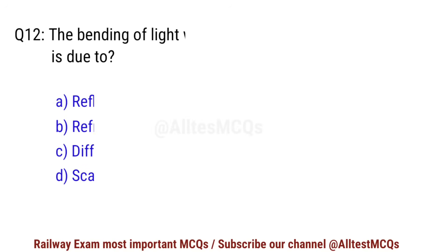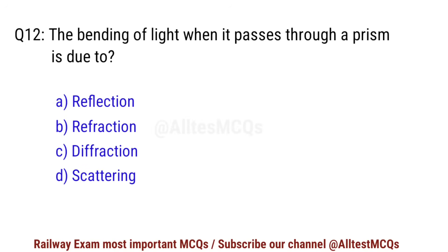Q12. The bending of light when it passes through a prism is due to? Right option is D. Refraction.